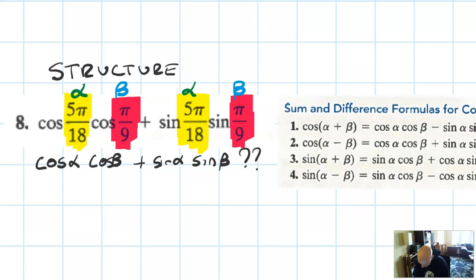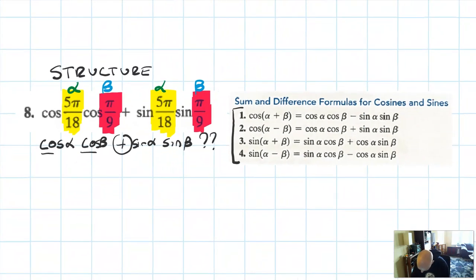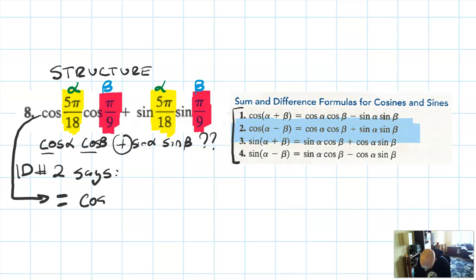Which of these identities has that structure? It's cosine cosine with a plus in the middle. It looks like identity number 2, cosine of alpha minus beta. So identity number 2 says that this is equivalent to cosine of alpha minus beta. Now I identified what the alpha and beta were, so this is going to be identical to the cosine of 5π over 18 minus π over 9.